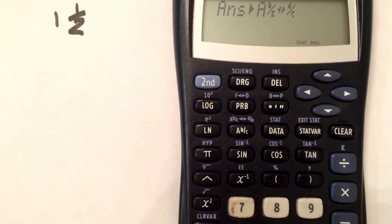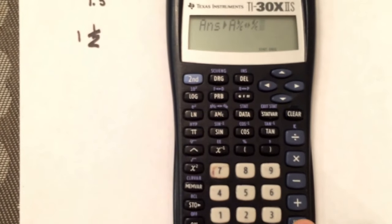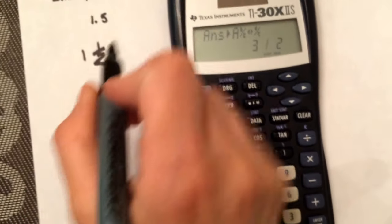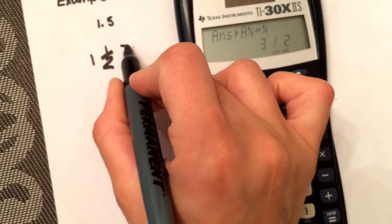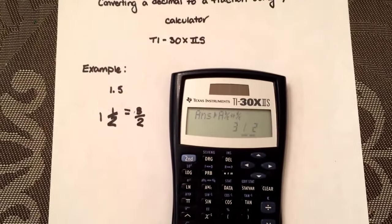Second function and that, because it's on top, and hit equals again. And there you go, it's 3 over 2. And that's it, it's that simple.